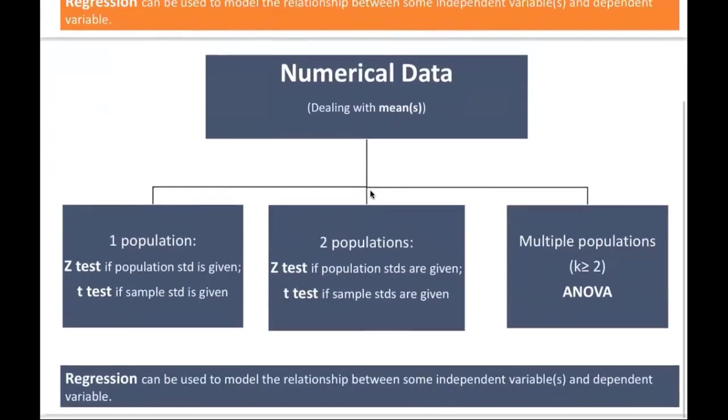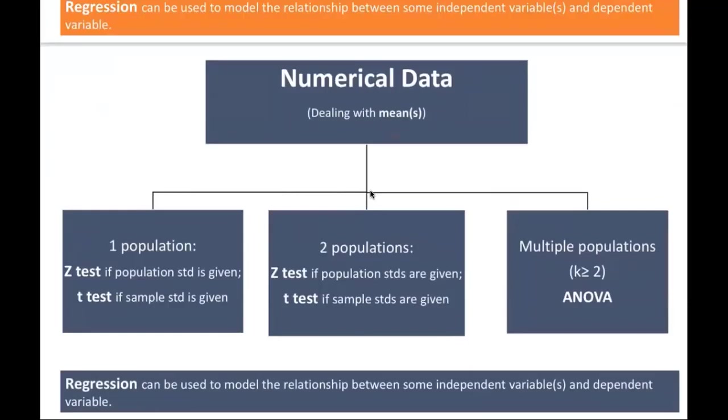Similarly, for numerical data, numerical data, it's going to be dealing with means and one population. It could be a Z, it could also be a T, as we are saying here. So whether it's Z or T, it really depends on whether the sigma is known or not, so sigma is given or not. If it's not given, we have sample standard deviation. For two populations fairly similar to that, it really also depends on whether population standard deviation or sample standard deviation is given. When it is multiple populations, we learn about ANOVA.